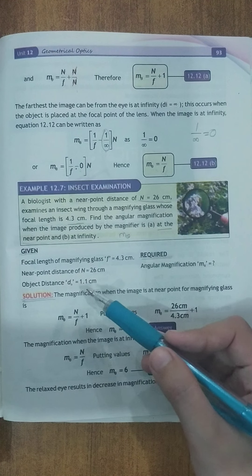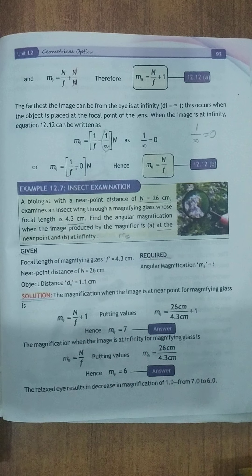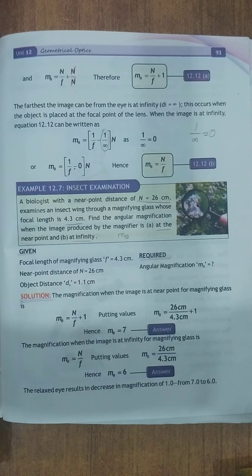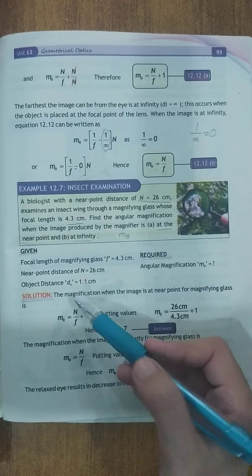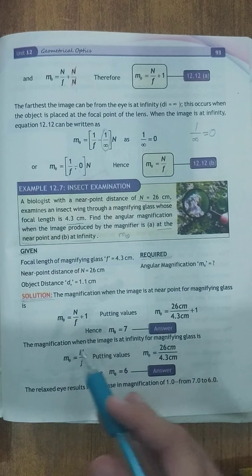Object distance 1.1 cm. Inhone object distance ko bhi given me mention kiya gaya hai. Halanke question mein nahi diya gaya hai. Aur iske bغayr bhi question solve ho jata hai. Solution.